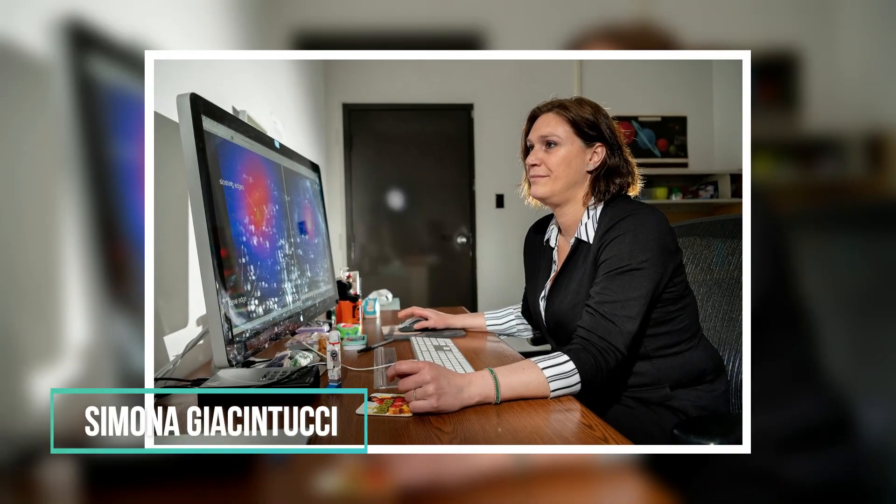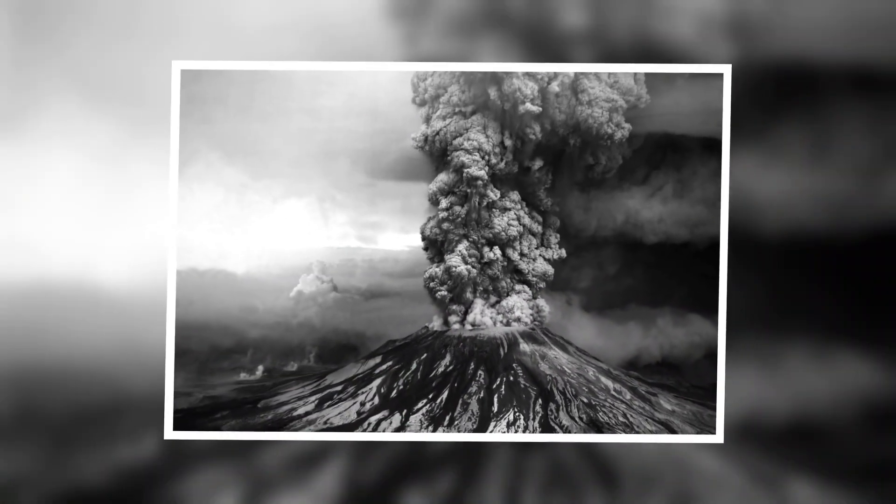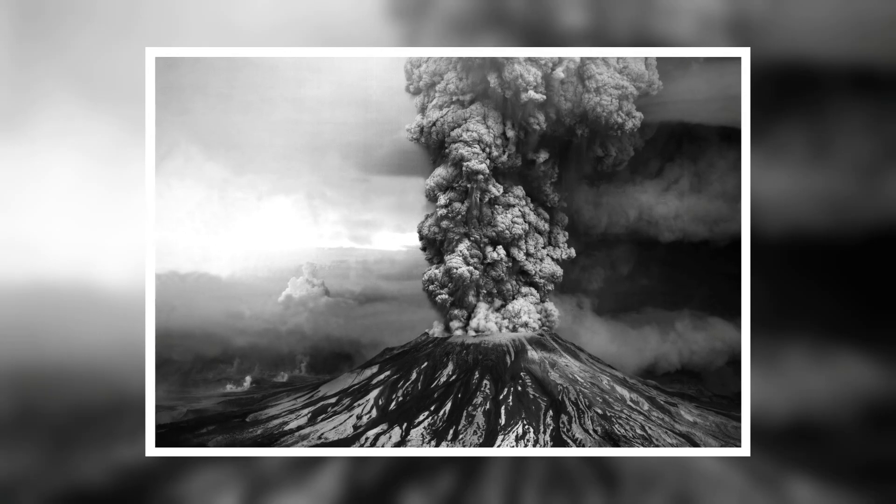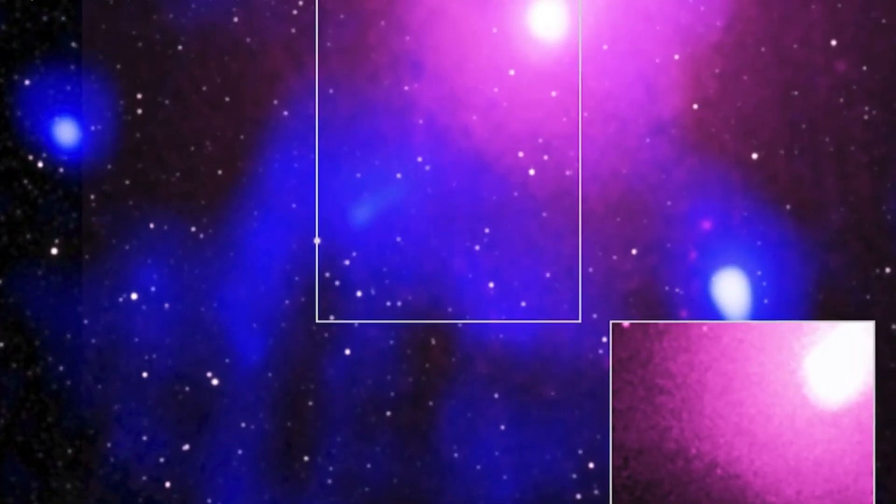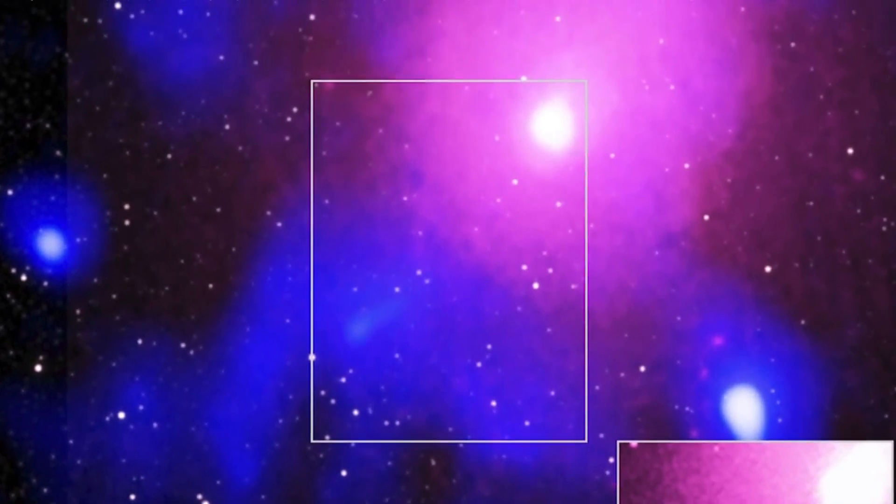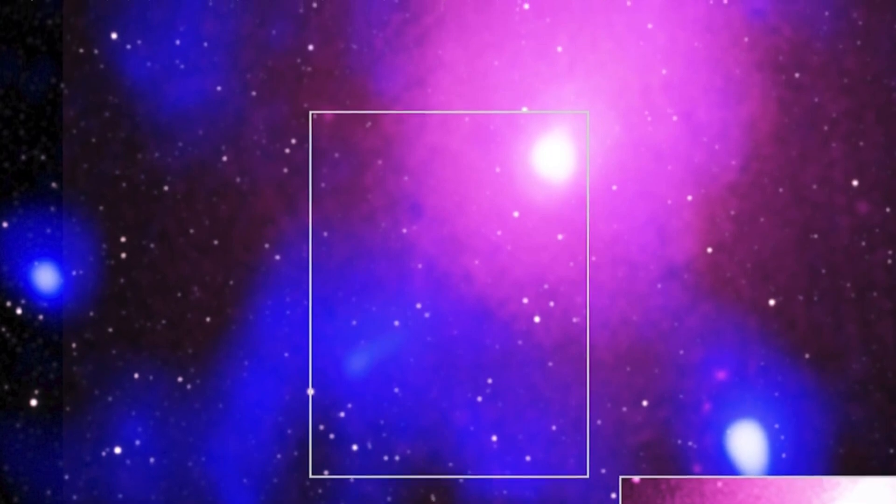Simona Giacintucci, who led the study, linked the blast to the 1980 eruption of Mount St. Helens that tore its top off. The main difference is that you could line up 50 Milky Way galaxies in the crater that this explosion made in the hot gas of the cluster.